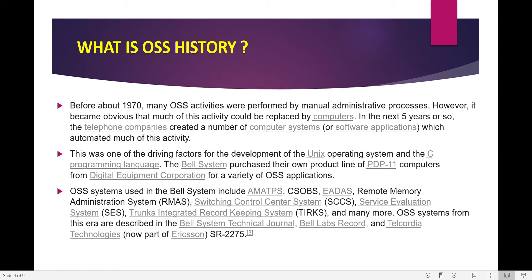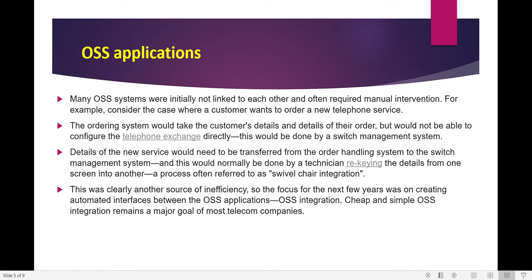The Bell System purchased their own product line of PDP-11 computers from Digital Equipment Corporation for a variety of OSS applications. OSS systems used in the Bell System included AMA, TPS, CSO, BS, and many others as seen on screen. These OSS systems from this era are described in the Bell System Technical Journal, which you can search for on the internet.